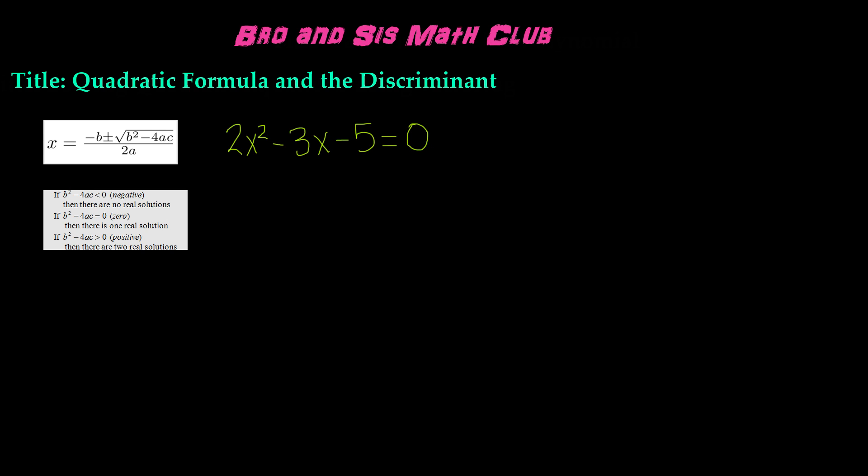So in this case, we have 2x squared minus 3x minus 5 equals 0. Once we identify the a, b, and c values, we can plug them into b squared minus 4ac to determine how many solutions it has.